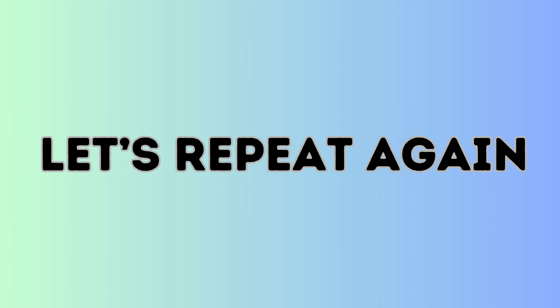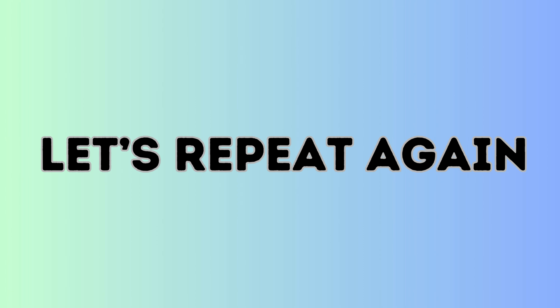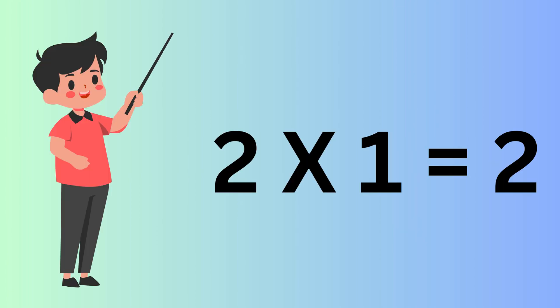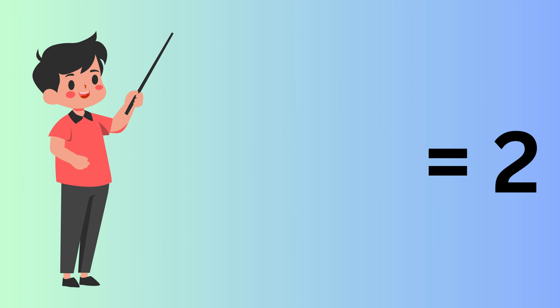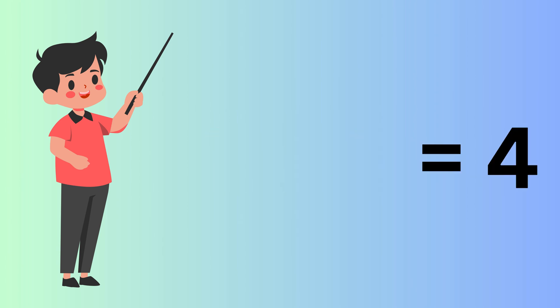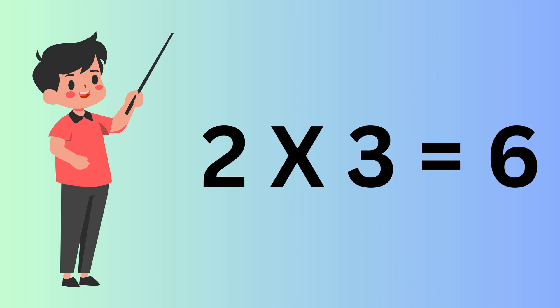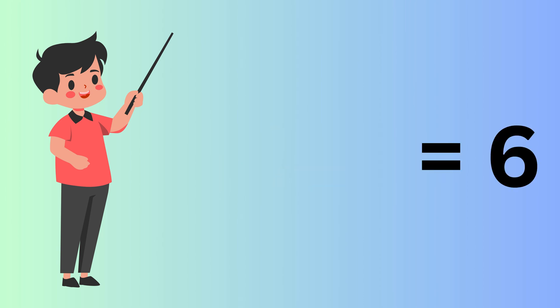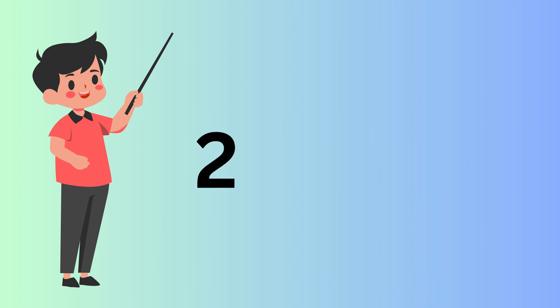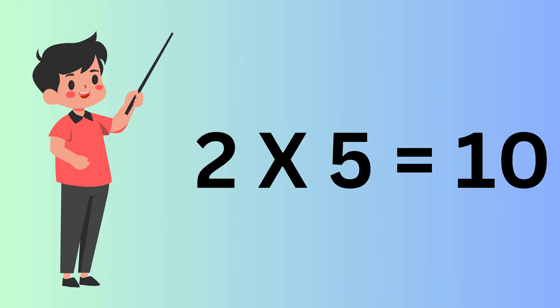Let's Repeat Again. Two Ones are Two. Two Twos are Four. Two Threes are Six. Two Fours are Eight. Two Fives are Ten.